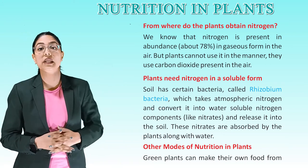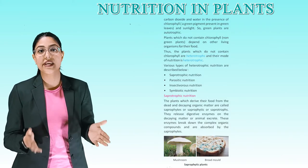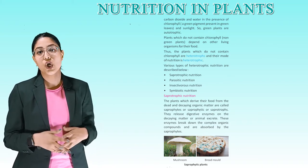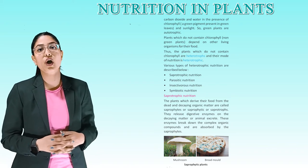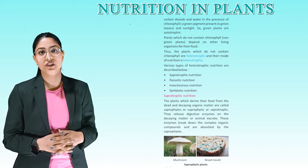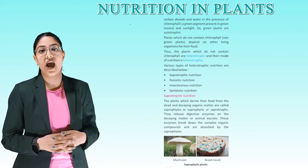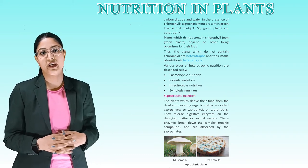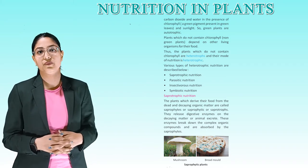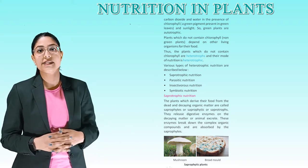Other modes of nutrition in plants. Green plants make their own food using chlorophyll and sunlight, so green plants are autotrophic. Plants which do not contain chlorophyll depend on other living organisms for their food — thus, non-green plants are heterotrophs and their mode of nutrition is heterotrophic. Various types of heterotrophic nutrition are: saprophytic nutrition, parasitic nutrition, insectivorous nutrition, and symbiotic nutrition.